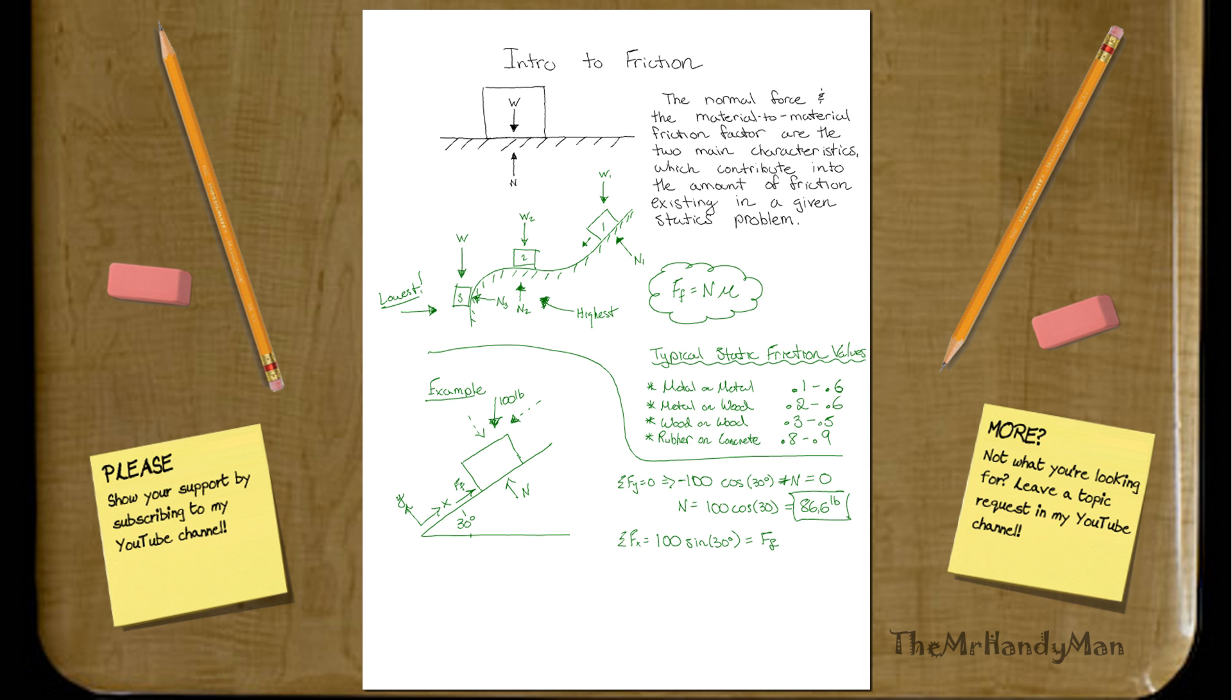So with that known, we have 100 sine of 30, which turns out to be 50 pounds equals the force due to friction, which is also 86.6 times our friction factor. And when you solve for that, you get 0.577 as a friction factor. And that's what friction factor you would need to maintain this box in equilibrium at a 30 degree angle.